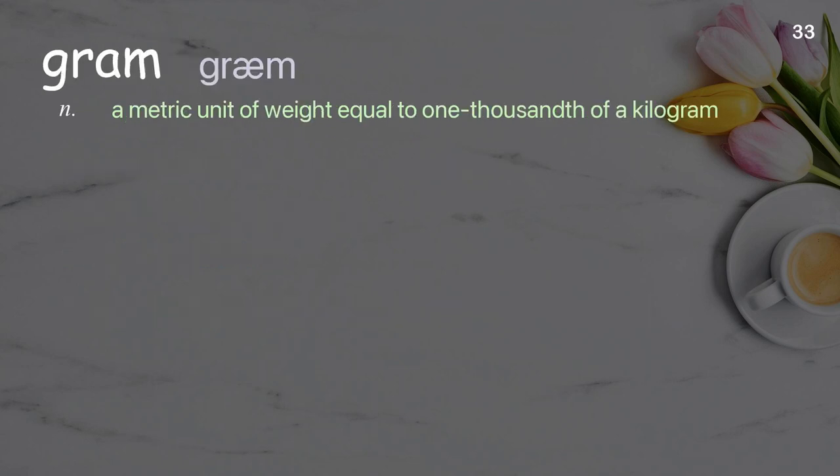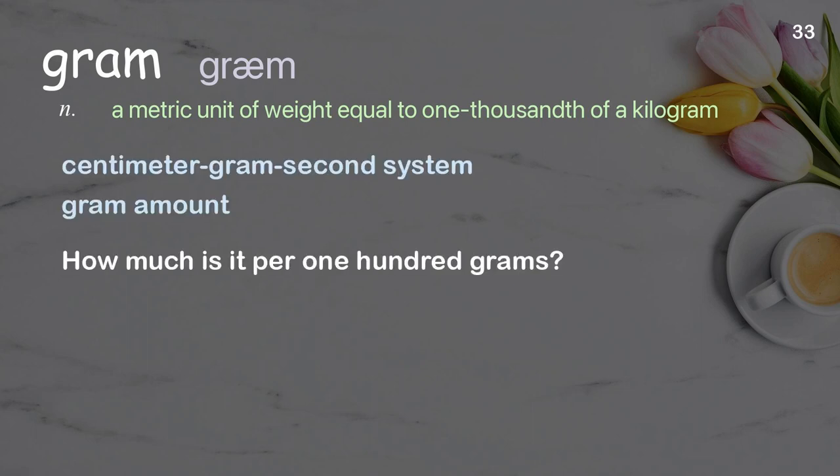Gram: a metric unit of weight equal to one-thousandth of a kilogram. Examples: centimeter-gram-second system, gram amount. How much is it per 100 grams?